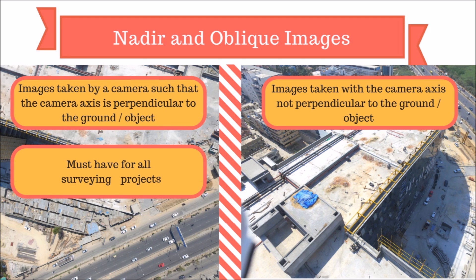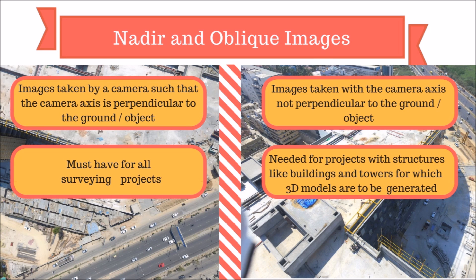Nadir images are a must-have for any project. Most of the outputs required by clients can be generated from a set of nadir images captured at the site. On the other hand, oblique images are needed for projects which have structures like buildings and towers, for which accurate 3D models need to be generated.